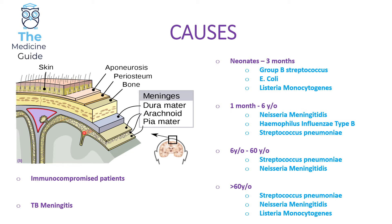In terms of past medical history, if a patient is immunocompromised — such as suffering from HIV, leukaemia, or taking chemotherapy — they're likely to develop meningitis from a Listeria monocytogenes infection. Patients can also develop TB meningitis if infected with Mycobacterium tuberculosis, so please keep that in mind.